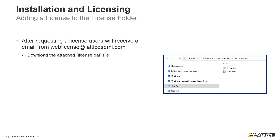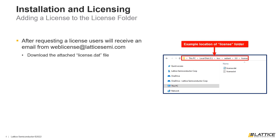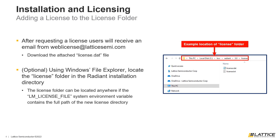To set up the license for Radiant, users will need to download the license file attached to the email. Once downloaded, the file will need to be moved to Radiant's license folder, which can be found in Radiant's installation directory and is called 'license'. A license can also be set up anywhere on a computer as long as the system environment variable LM_LICENSE_FILE is updated to match the full path of the folder containing the license file.